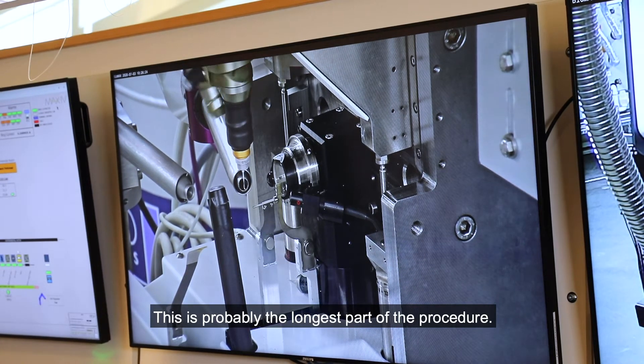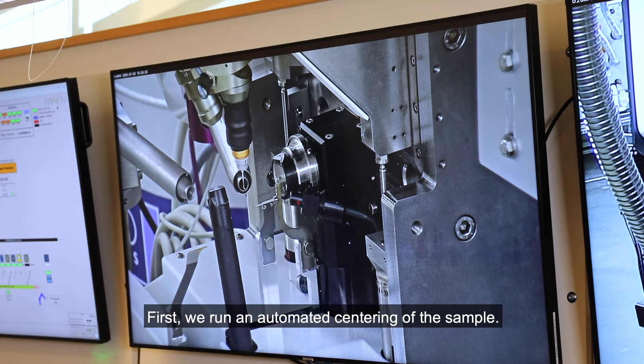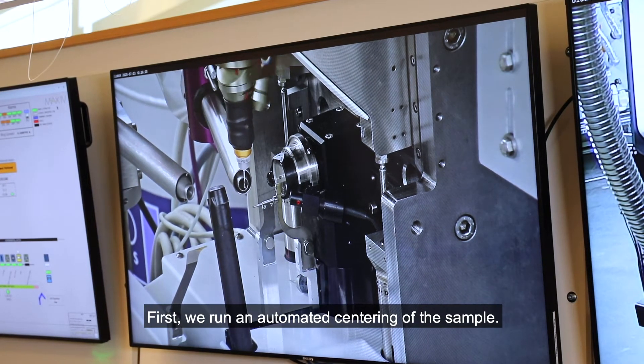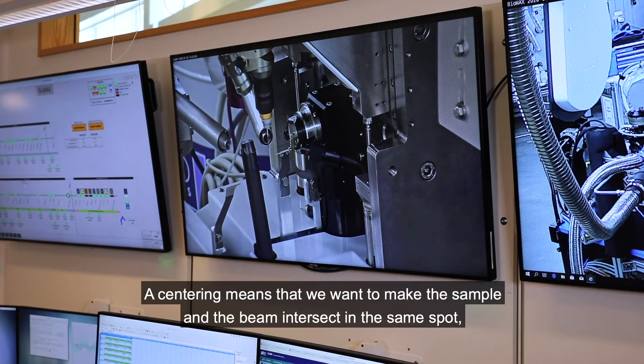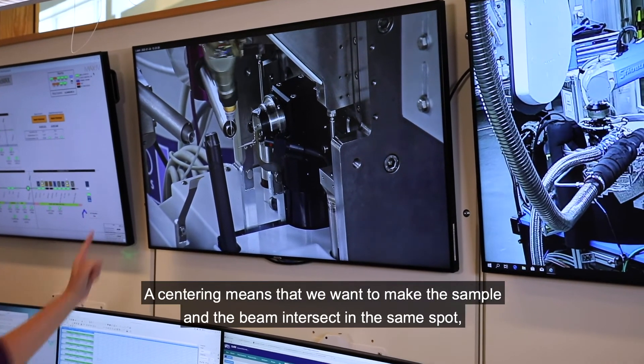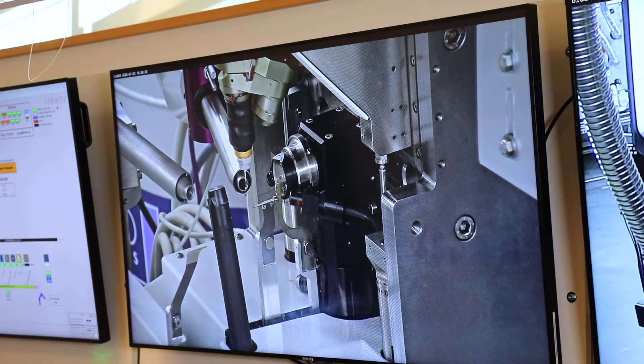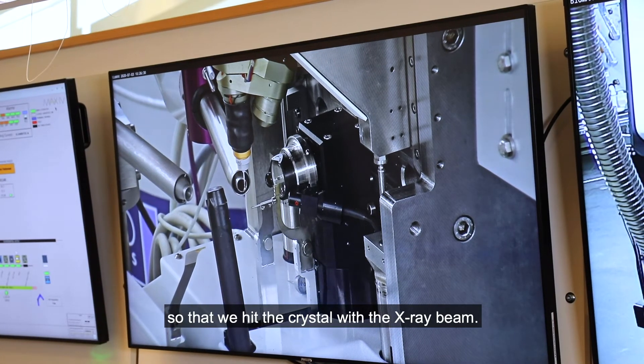This is probably the longest part of the procedure. First we run automated centering of the sample. Centering means that we want to make the sample and the beam intersect in the same spot, so we hit the crystal with the x-rays.